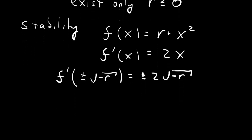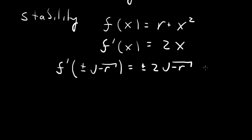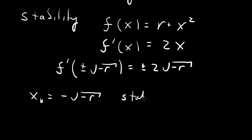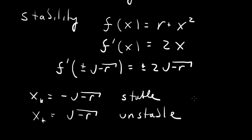If f-prime is negative, then the fixed point is stable. The lower fixed point, x-star equals minus root of minus r, has a negative derivative, so it is stable. The other fixed point, x-star equals plus root of minus r, is unstable. Both exist only for r less than or equal to 0.